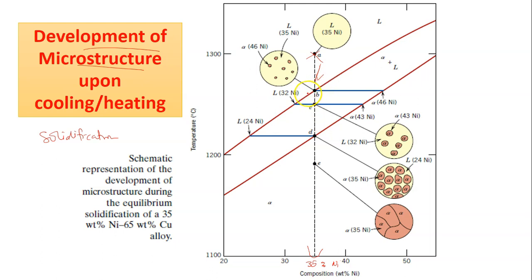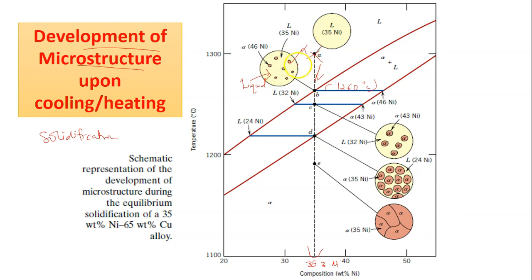Upon further cooling of this alloy, when it reaches the liquidus line at approximately 1260°C, we are at point B. We can see that the first solid alpha begins to form. This is the developed microstructure at point B — solid alpha begins to form, with the interior still being liquid.